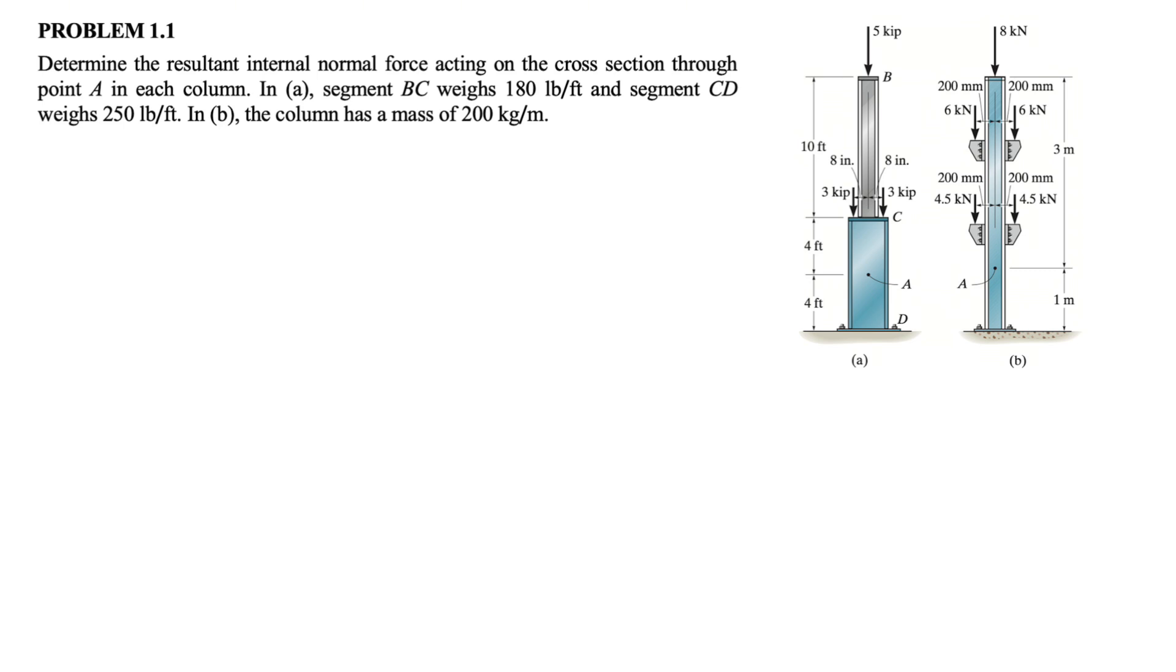And segment CD has a weight of 250 pounds per foot. We have to take into account the weight of each part of these members. In part B, which we have on the right hand side, the column has a mass of 200 kilograms per meter.